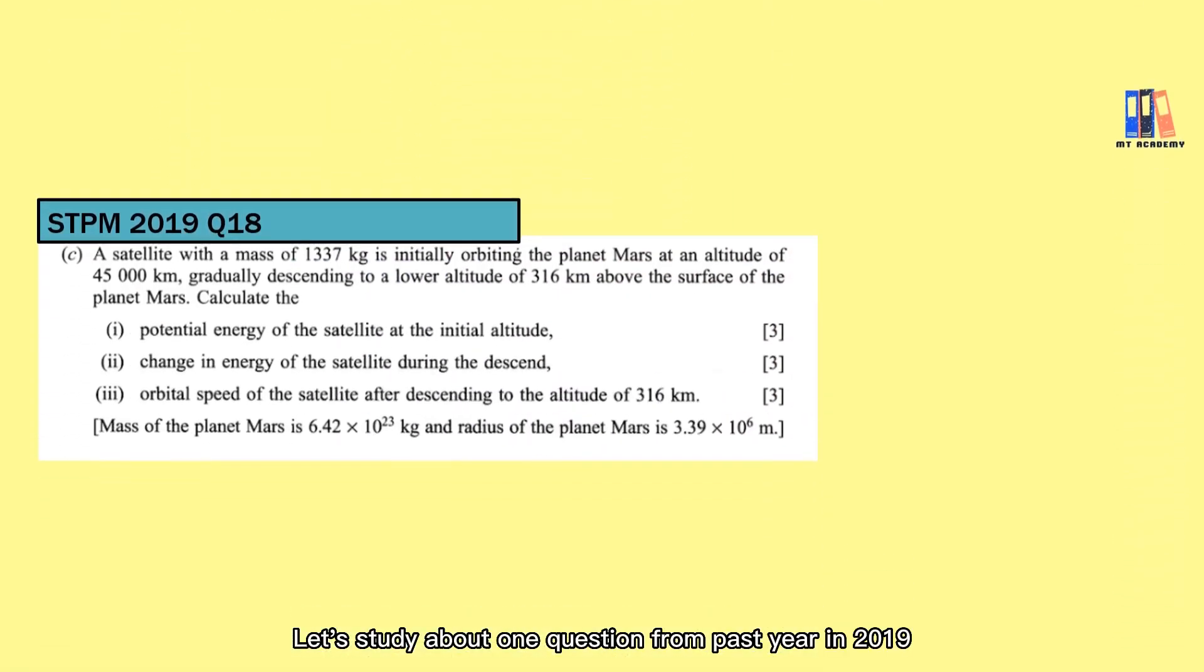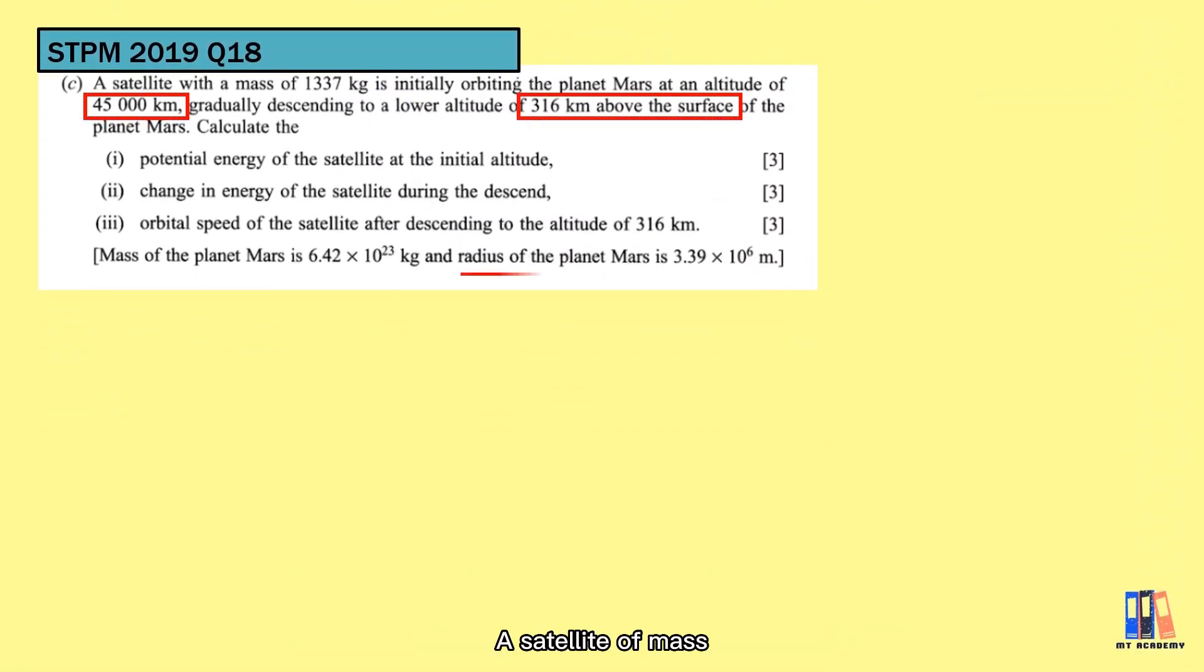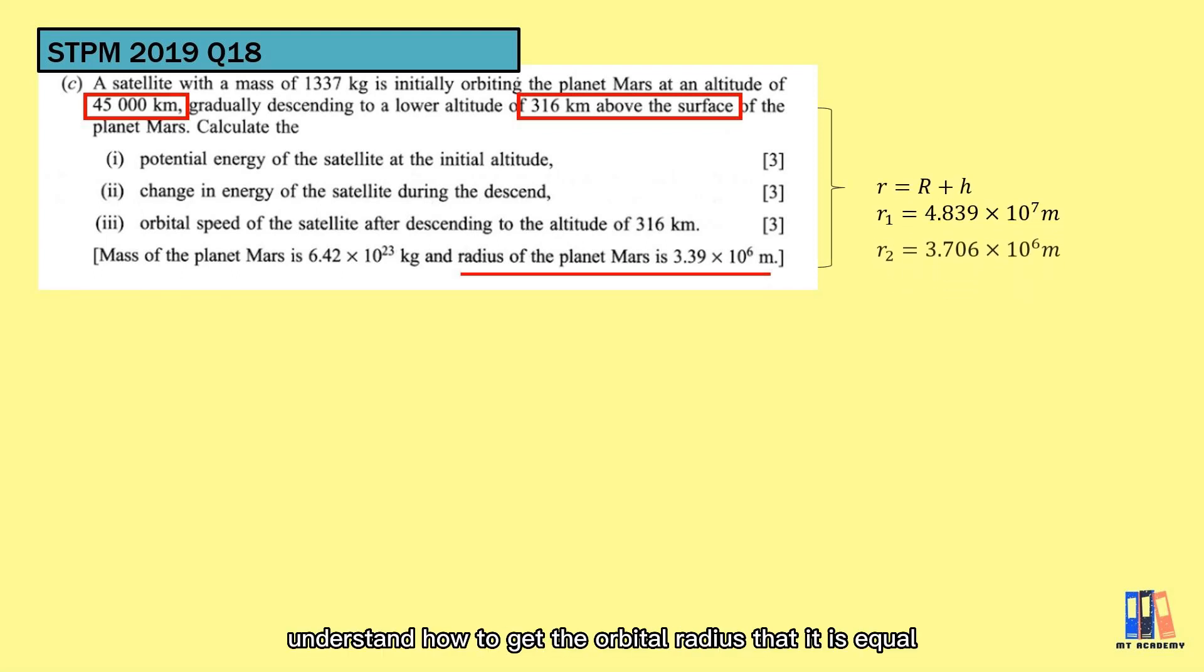Let's study about one question from STPM 2019. A satellite of mass 1237 kg is initially orbiting the planet Mars at an altitude of 45,000 km, then gradually descending to a lower altitude of 316 km above the surface of the planet. So from here, you should already understand how to get the orbital radius that it is equal to the radius of the planet plus the height from its surface. From the question, we can quickly obtain two radius. One is 4.839 × 10⁷ m and another is 3.706 × 10⁶ m.